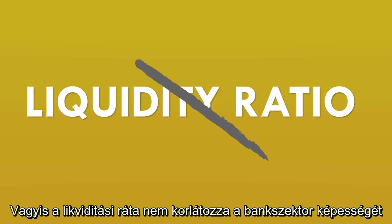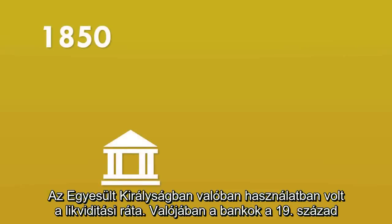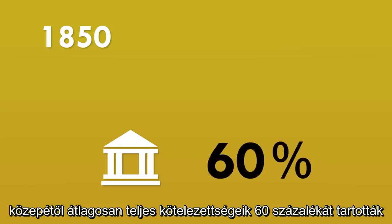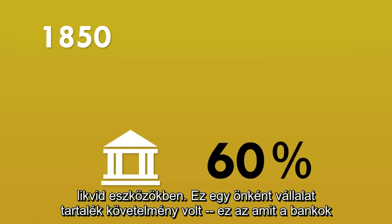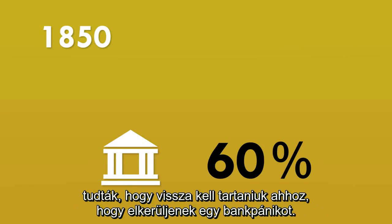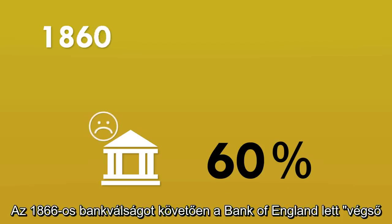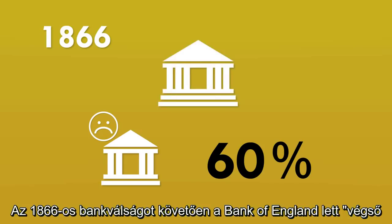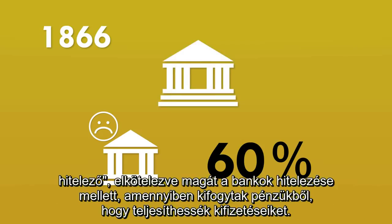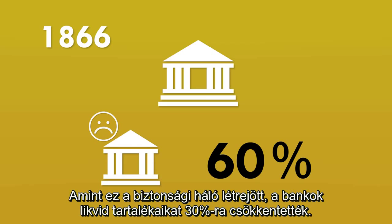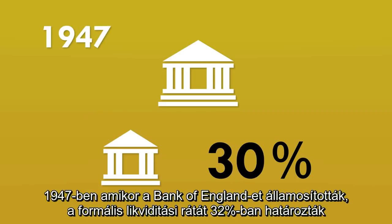We did used to have a liquidity reserve ratio in the UK. From the mid-19th century, banks tended to keep an average of 60% of liquid assets as a proportion of their total liabilities — a self-imposed reserve requirement based on what they knew they needed to avoid the risk of a bank run. In 1866, there was a banking crisis, and the Bank of England took on the role of lender of last resort, committing to lend to banks that ran out of money. Once this safety net was in place, banks reduced their liquid reserves to around 30%. In 1947, when the Bank of England was nationalised, they imposed a formal liquidity reserve ratio of 32%.